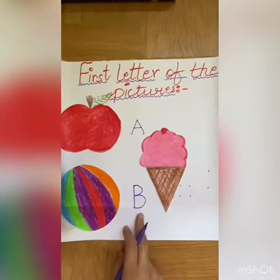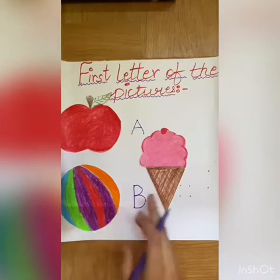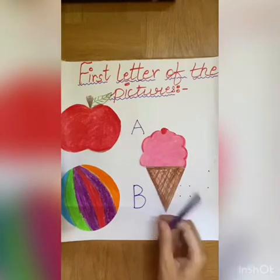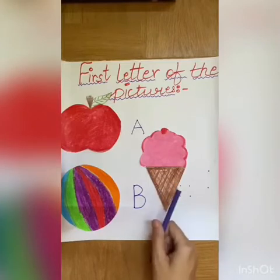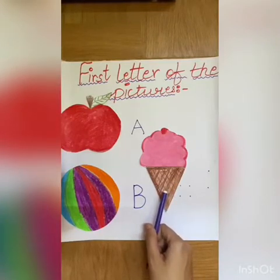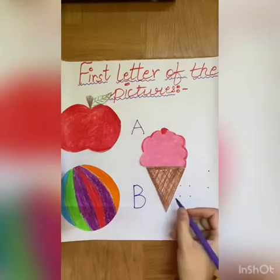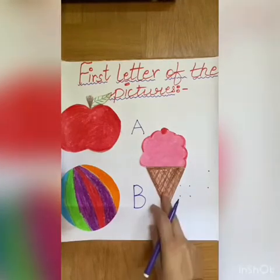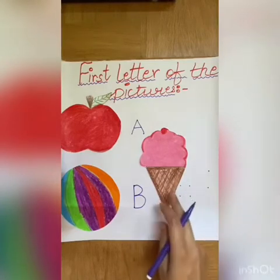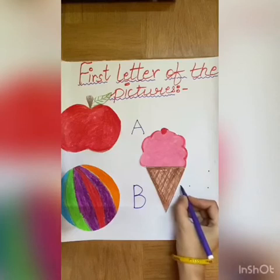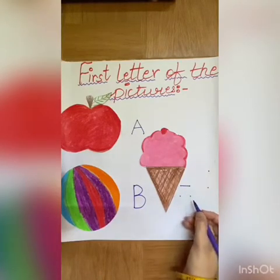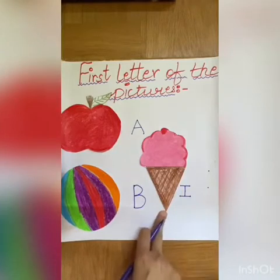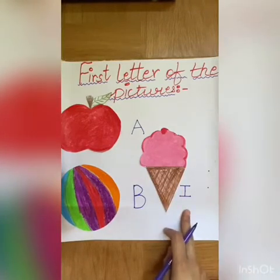Now what is this? Yes, this is an ice cream. This is an ice cream. Do you like ice cream? Yes. So what will you write here? You will write I. I, ice cream. And for that, you have to make one straight line at the top, then one slanting line, then one slanting line at the bottom. I, ice cream.